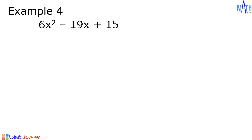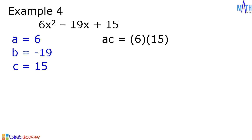Last example: let us factor 6x squared minus 19x plus 15. In this quadratic trinomial, a is equal to 6, b is equal to negative 19, and c is equal to 15. Let us multiply the values of a and c: 6 times 15 is equal to 90. Next, let us find factors of 90 that when added equal negative 19. The factors we need are negative 9 and negative 10, since negative 9 times negative 10 is equal to 90, and negative 9 plus negative 10 is equal to negative 19.